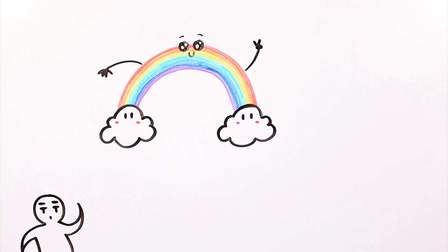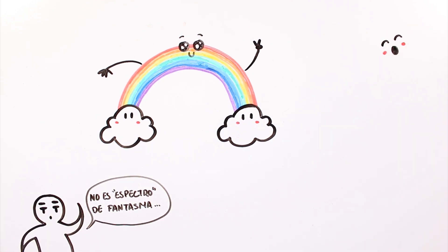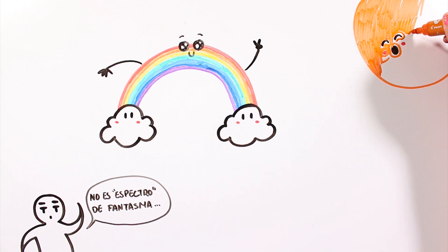A rainbow is a light spectrum with the shape of an arch, where the seven colors of the visible light spectrum are broken down.